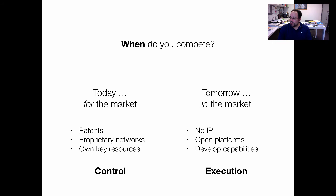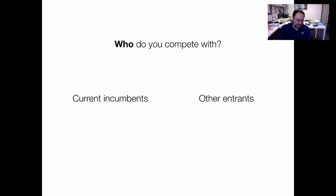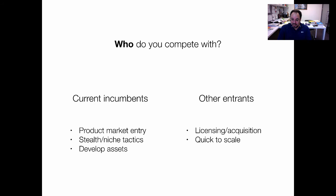The other dimension is who do you compete with — current incumbents or other entrants? Competing against incumbents involves product market entry, stealth niche tactics, and developing assets — all things you hear in the disruption playbook, which we'll talk about more later. Collaborating with incumbents means using licensing or acquisition to develop partnerships; you can be much quicker to scale, and you get capabilities that reinforce those partnerships.